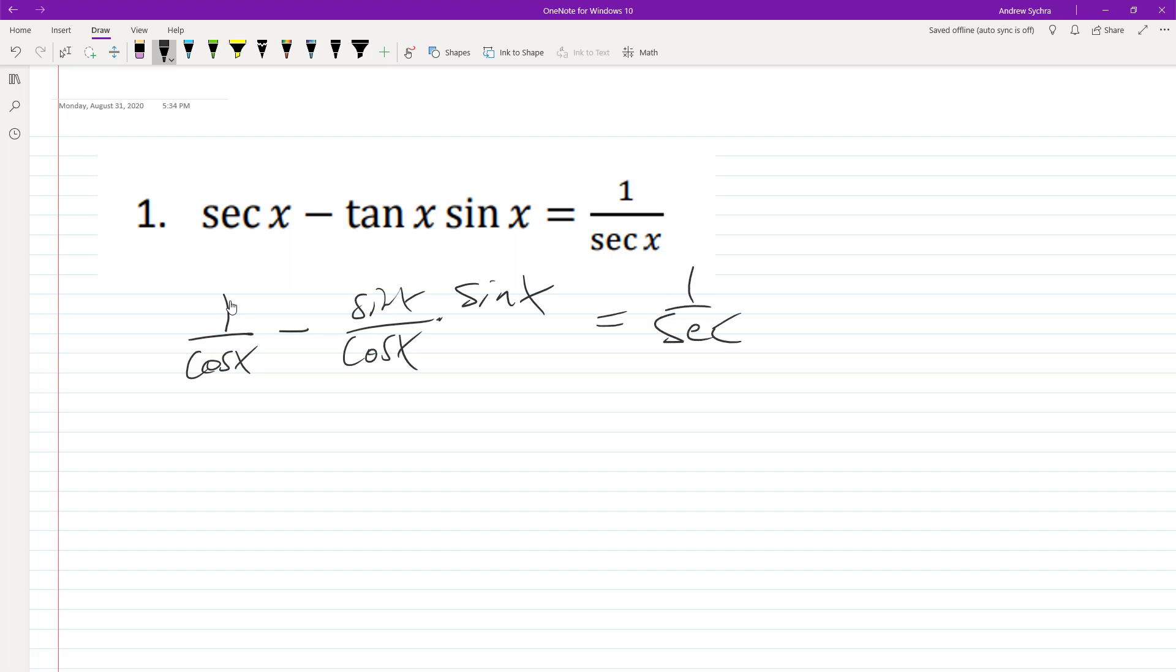What we can do is it looks like we can combine these because they have the same base. We can do 1 minus sine x sine x, so that becomes sine squared x, and this is all over the cosine of x.